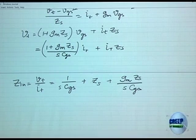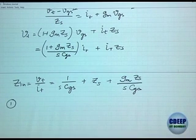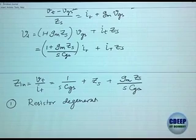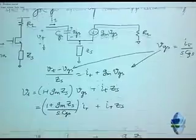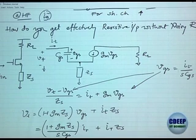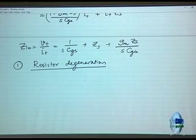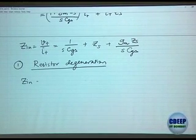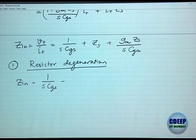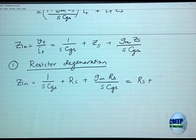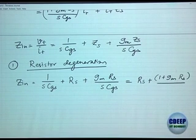Substituting V_GS, you get V_T equals (1 + G_M·Z_S)/(S·C_GS)·I_T + I_T·Z_S. So Z_in equals V_T/I_T equals 1/(S·C_GS) + Z_S + G_M·Z_S/(S·C_GS). Now let us see what happens for different degeneration types.